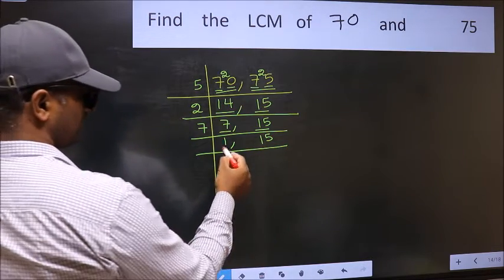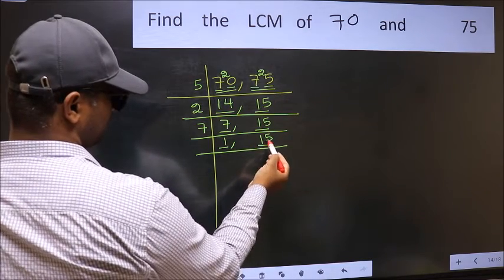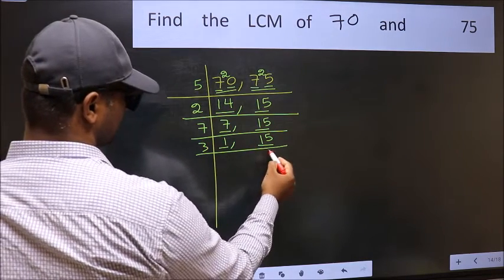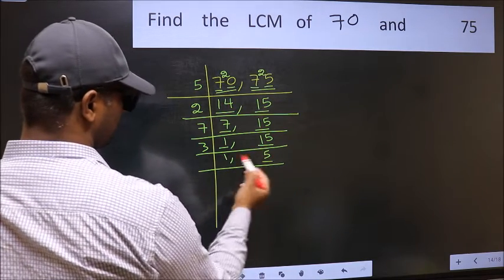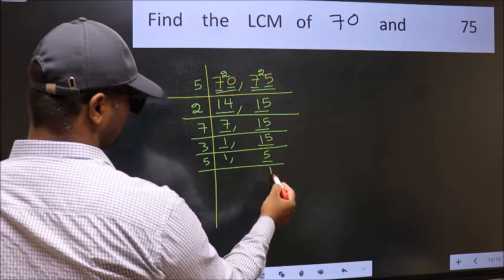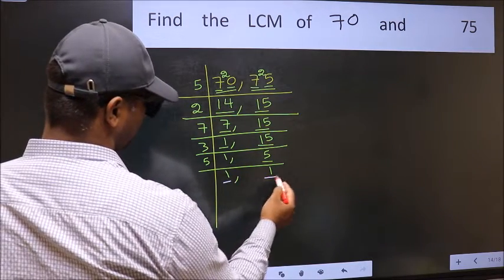Now we got 1 here, so focus on the next number 15. 15 is 3 fives 15. Now here we have 5. 5 is a prime number so 5 once 5. So we got 1 in both the places.